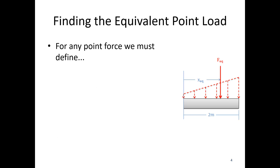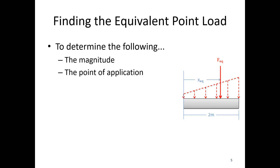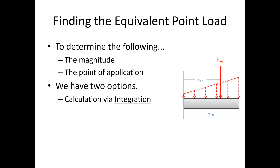Finding the equivalent point load: for any point force we must define the magnitude, the direction, and the point of application. For now we're only going to deal with distributed forces with a uniform direction, so the direction of the distributed force is simply the direction of the equivalent point load. What we need to define are the magnitude and point of application, and we have two options: calculate via integration or via the method of composite parts.